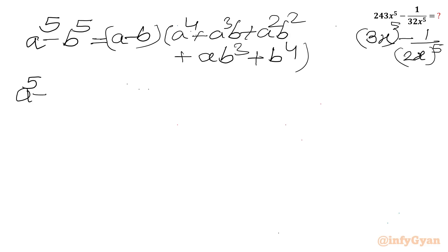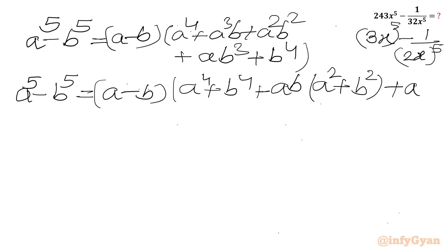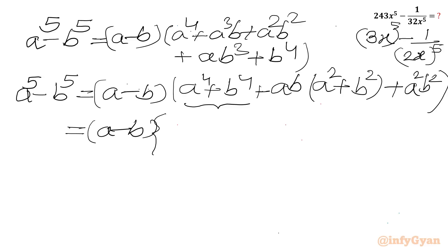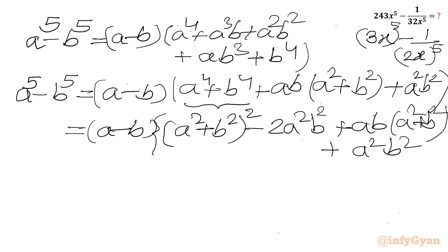Our required expression is A⁵ minus B⁵ = (A minus B) times [(A⁴ + B⁴) + AB(A² + B²) + A²B²]. Here A⁴ + B⁴ = (A² + B²)² minus 2A²B², and the remaining terms are AB(A² + B²) + A²B².